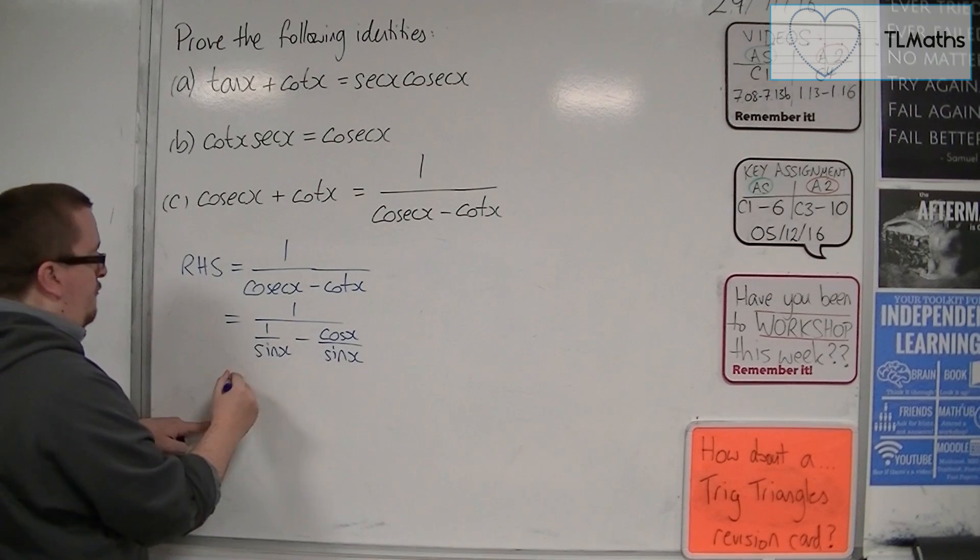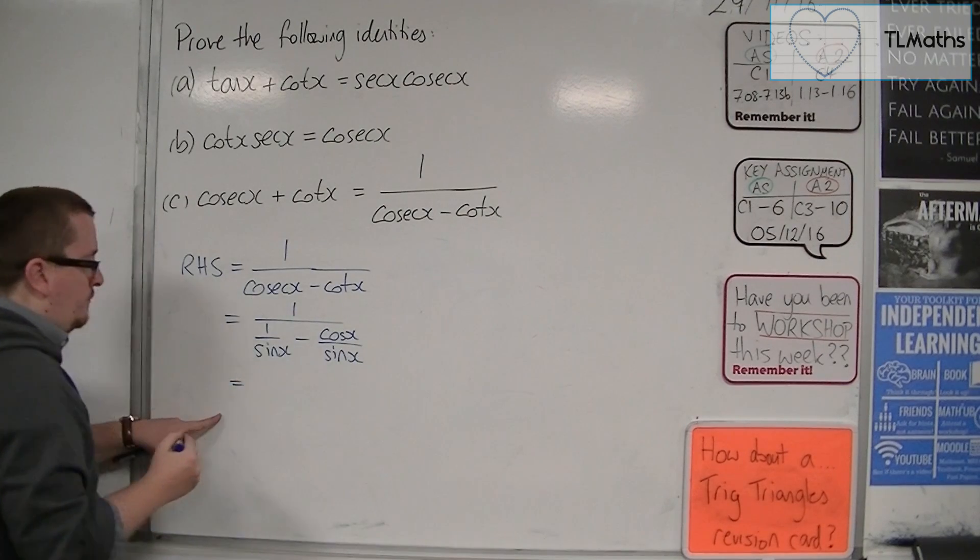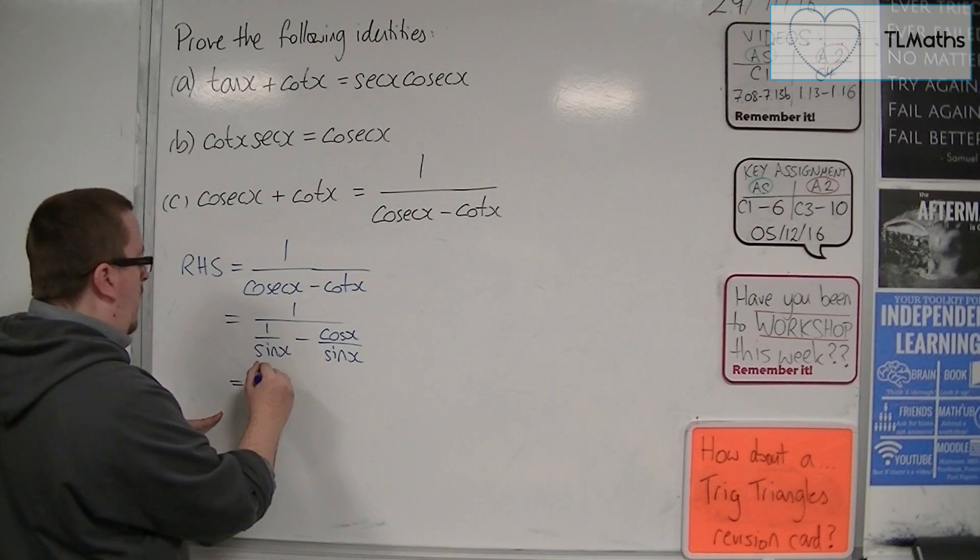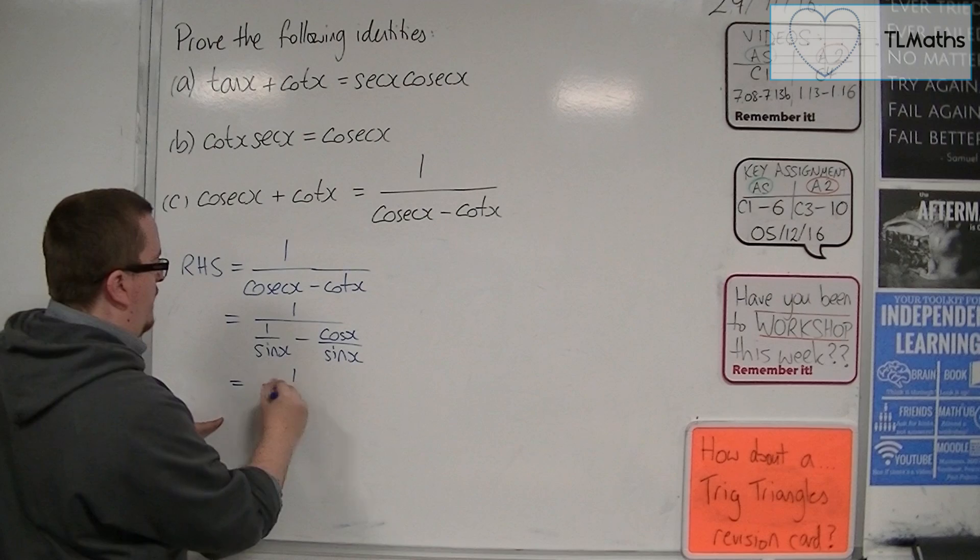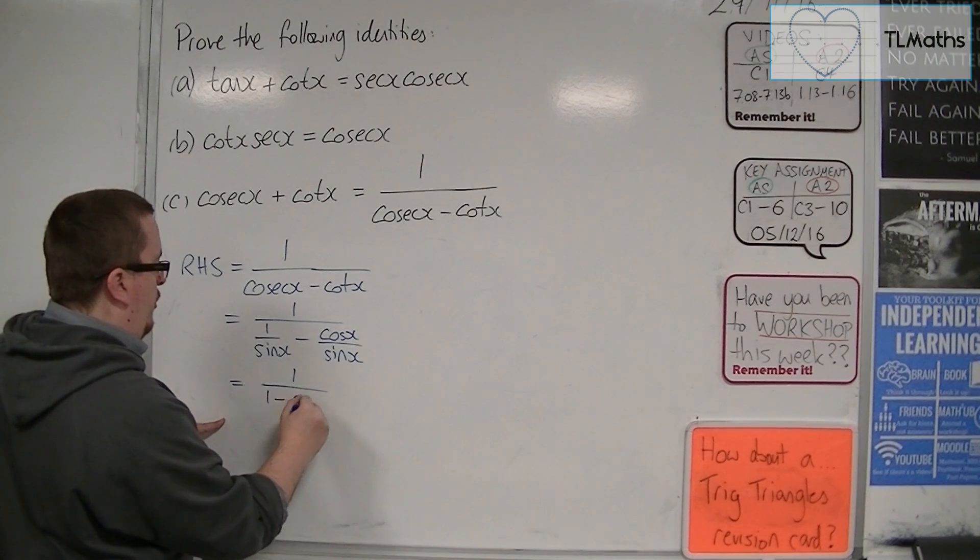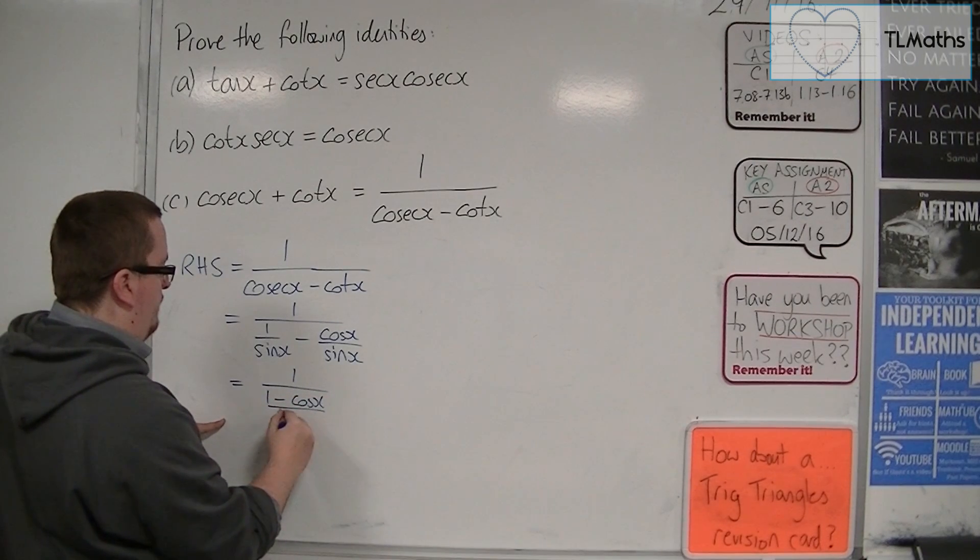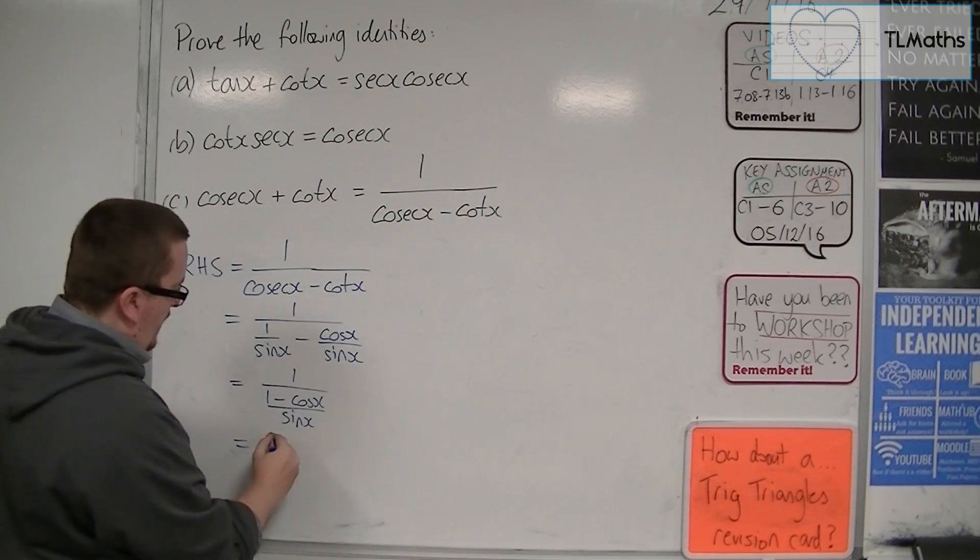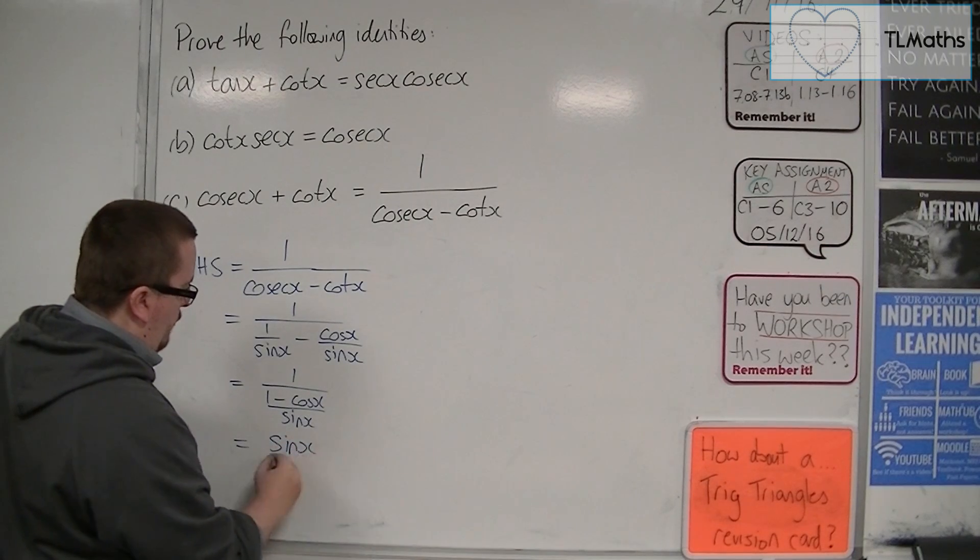Now we can combine those two fractions. So we're going to get one over one minus cos over sine. And that, flipping, because we've got the reciprocal here, is sine x over one minus cos x.